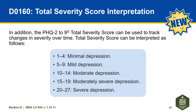The PHQ 2 to 9 total severity score can be used to track changes over time. The severity score can be interpreted as follows: 1 to 4 minimal depression, 5 to 9 mild depression, 10 to 14 moderate depression, 15 to 19 moderately severe depression, and 20 to 27 severe depression.